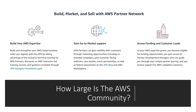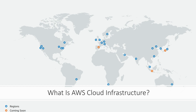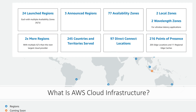What is AWS cloud infrastructure? The over 175 fully featured AWS services are offered from data centers spread out over an extensive global cloud infrastructure encompassing 245 countries and territories. As of this recording, the AWS global cloud infrastructure consists of 24 geographic regions with 77 availability zones connected by low-latency, high-throughput, and highly redundant networking.